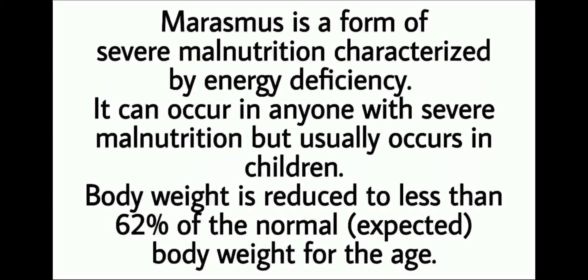Let's first discuss the marasmus condition. Marasmus is a form of severe malnutrition characterized by energy deficiency. It can occur in anyone with severe malnutrition but usually occurs in children. Body weight is reduced to less than 62% of the normal body weight for the age.